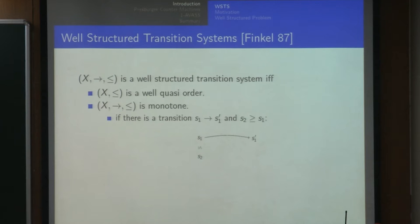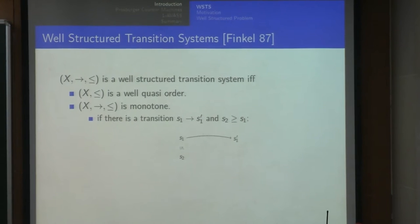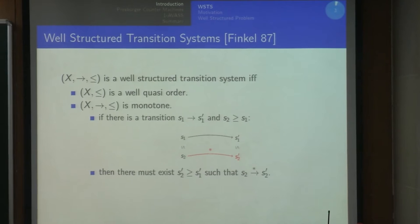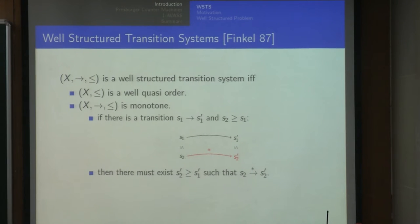The title has two things: the well-structured problem and Pressburger Counter Machines. Let's define the first one. An ordered transition system has a set of configurations, a transition relation, and an ordering on the configurations. It is well-structured if it satisfies two conditions.